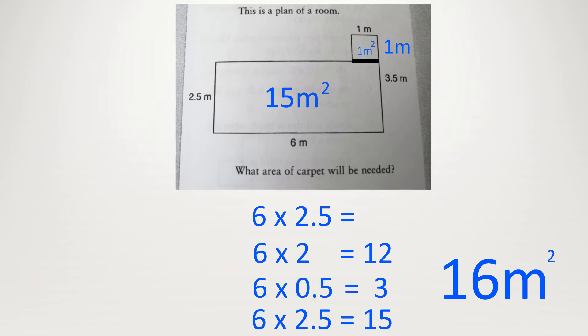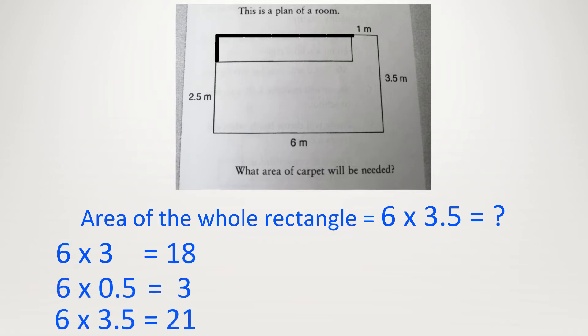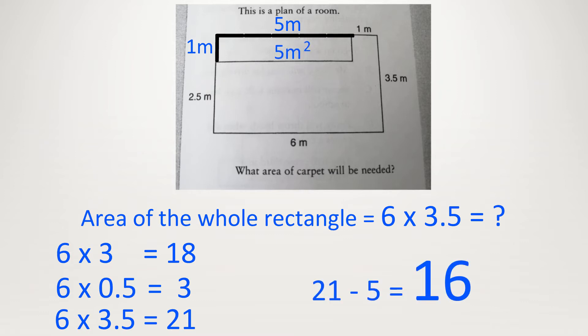The other way is to draw a dotted line and work out the bit that they took off. We could do 6 times 3.5: that's 6 times 3 equals 18, plus 6 times a half equals 3, so 18 plus 3 equals 21. Then we take off the top bit. How long is this? It is 6 minus 1 equals 5, so it's 5 times 1 equals 5. And then we get the same answer: 21 minus 5 equals 16.